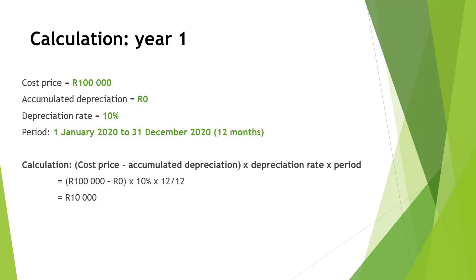Calculating the depreciation on the vehicle using the reducing balance method means that you use the cost price less the accumulated depreciation, times the depreciation rate, and then times the number of months in the period divided by 12. Therefore, it is R100,000 cost price less R0 accumulated depreciation, times 10%, times 12 months divided by 12 months, totaling R10,000 depreciation to be recorded in the first year.